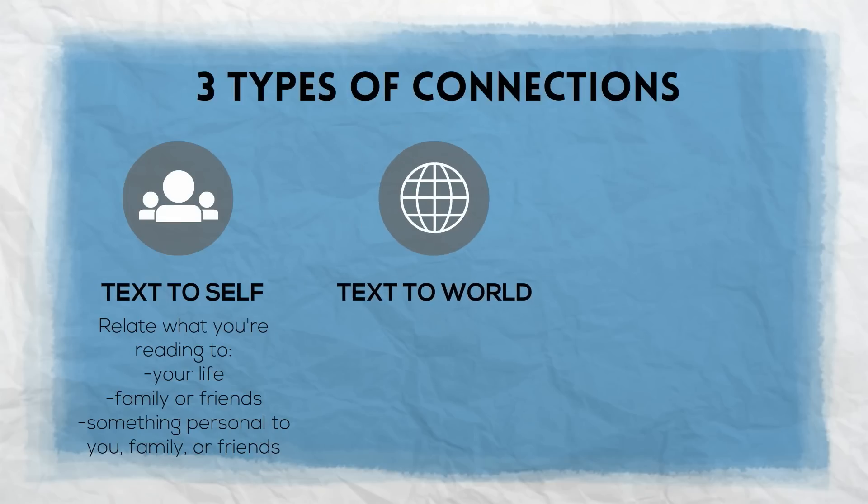Another type of connection we're going to talk about is a text-to-world connection. This is when you relate what you're reading to the world around you. You make connections to events, people, or places that exist in the real world.